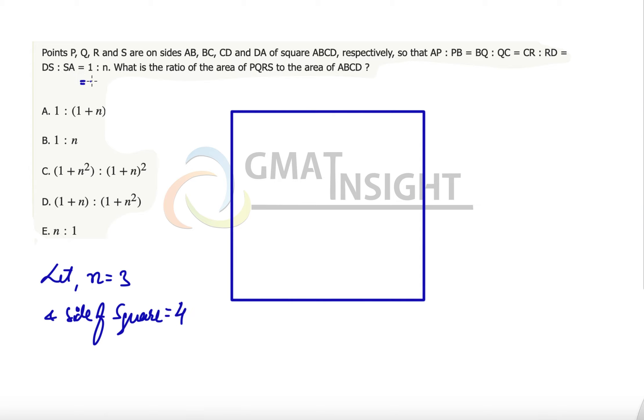That means I'm dividing all the sides into the ratio of 1 over 3. Let's quickly do the markings. So we have ABCD. Now let's quickly plot the other points.